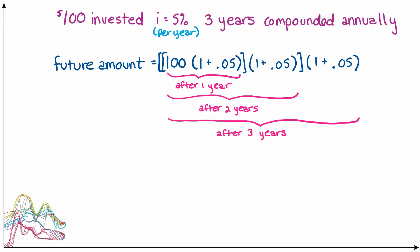Another way to write this would be just to say that the future amount is equal to the original amount of 100 times 1 plus 0.05 to the third power. Numerically this is equal to $115 and about 76 cents.